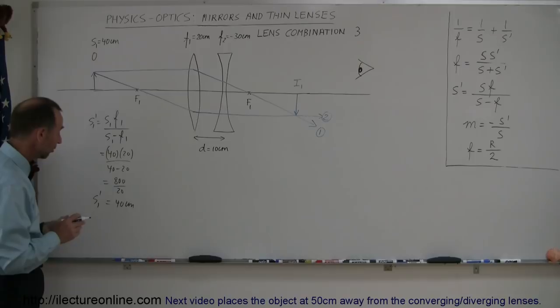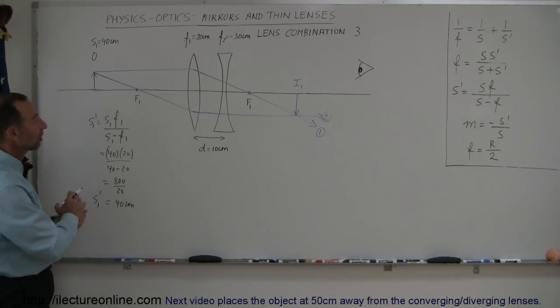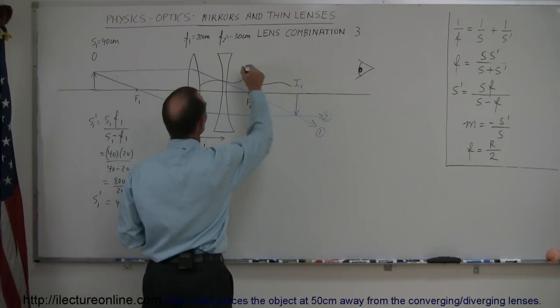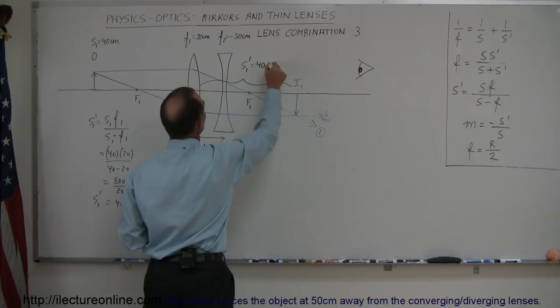It's a positive 40 centimeters. Positive means it's a real image. 40 centimeters means it's 40 centimeters past the second lens, and so we can say that this distance, which is the s1 prime, is equal to a positive 40 centimeters.